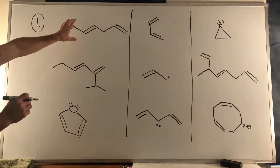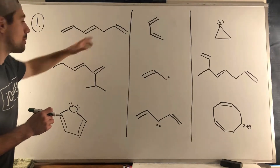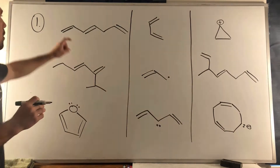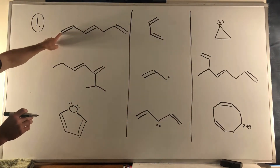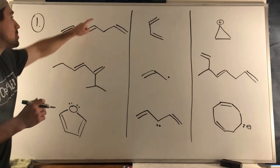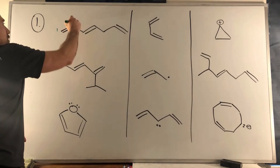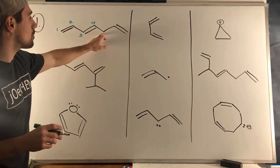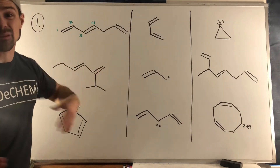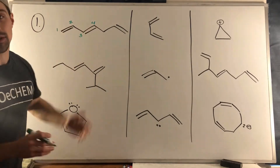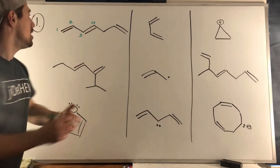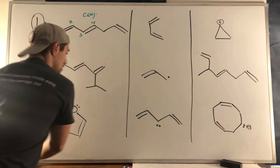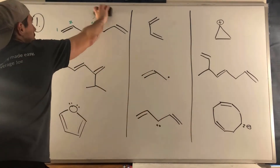Looking at the first structure, we're mostly looking for a network of sp2 atoms. I certainly see sp2, sp2, sp2, sp2 — that's enough to be conjugated. We don't get the full chain because this carbon right here is an sp3, but we have four sp2 carbons in a row — we only needed three. So this structure is absolutely conjugated.